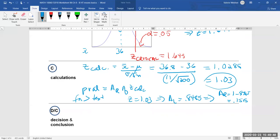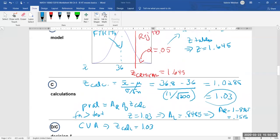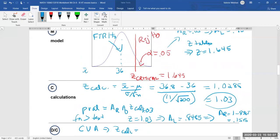Now for our decision and our conclusion let's do the critical value approach first. So this we need our zed calculated. And we got zed calculated is 1.03. Now what I'm going to do I'm just going to come up here and I'm going to locate zed calculated.